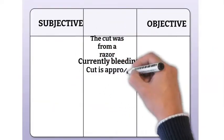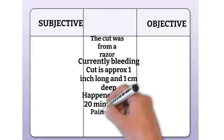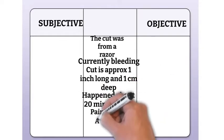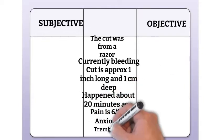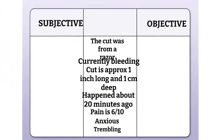Let's take a look at the different pieces of data that we collected. The patient was cut by a razor. It's currently bleeding. The cut is approximately one inch long and one centimeter deep. It happened about 20 minutes ago. Pain is 6 out of 10. The patient is anxious and trembling.